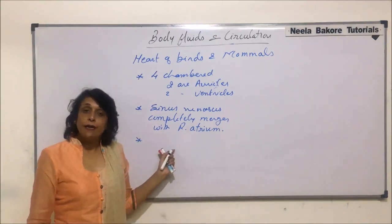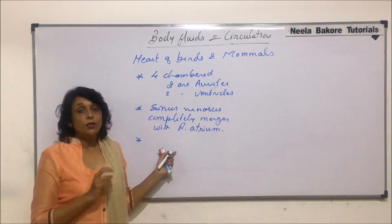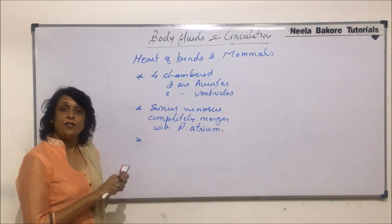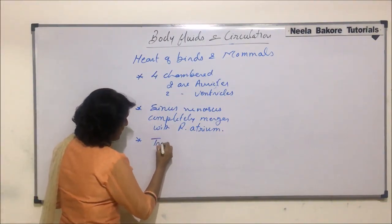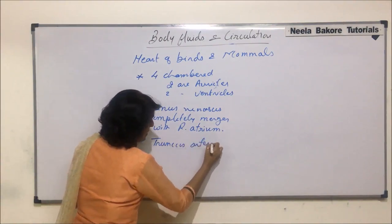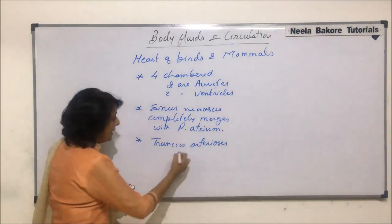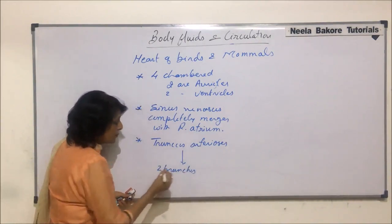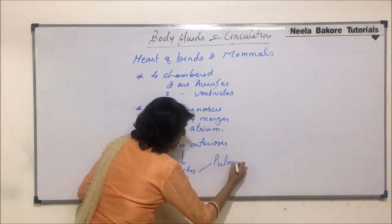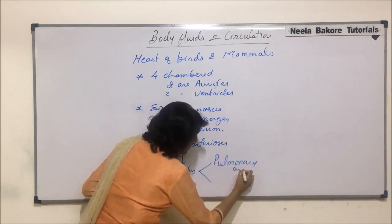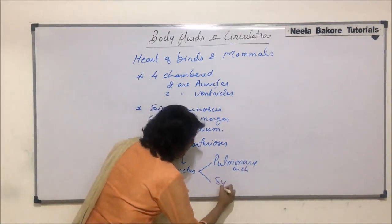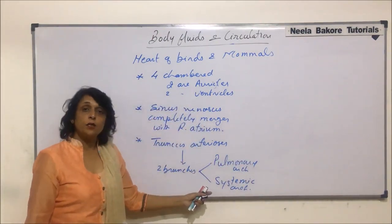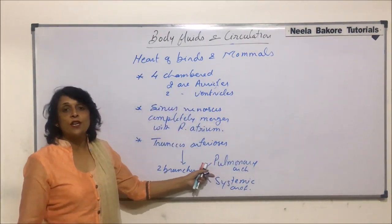Truncus arteriosus had already divided into branches in the case of reptiles. Here, in birds and mammals, the truncus arteriosus divides into only two branches — one is known as the pulmonary arch and the second one is known as the systemic arch — and there is only one systemic arch and only one pulmonary arch arising.